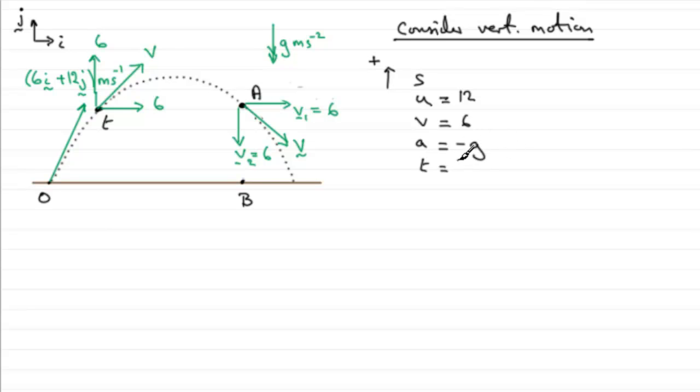So we can use v equals u plus at. Now what is v? V is going to be six equals u, which is 12, and then we've got minus 9.8 for g, and then times t.